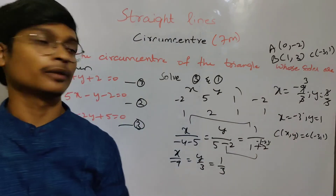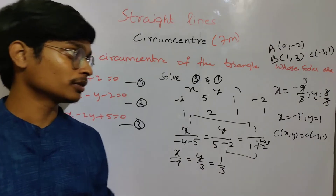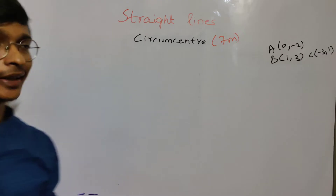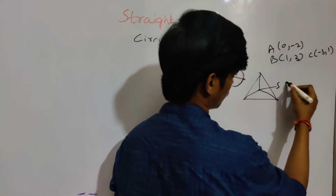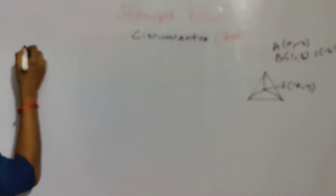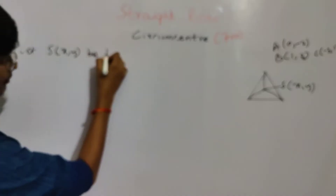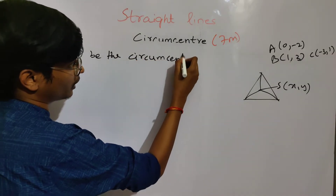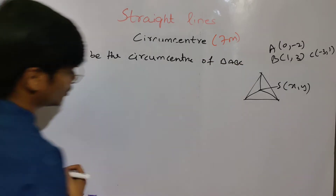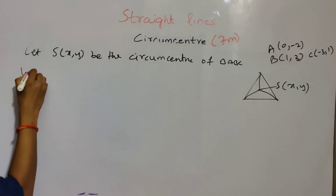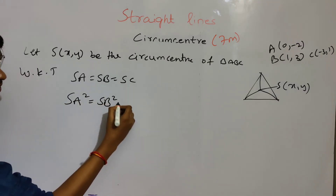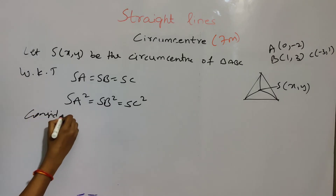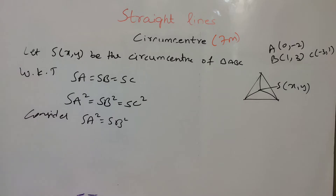Now x equals to 2 — let's check. In the context of this type of problem, you should be able to find the circumcenter. We will switch to the triangle and find that S will cut S of x, y. Let S of x, y be the circumcenter. We know that SA equals to SB equals to SC.